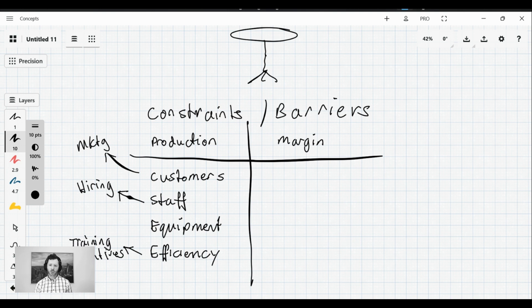On the margin side the two things that are going to constrain our margin are our pricing and our cost of delivery.